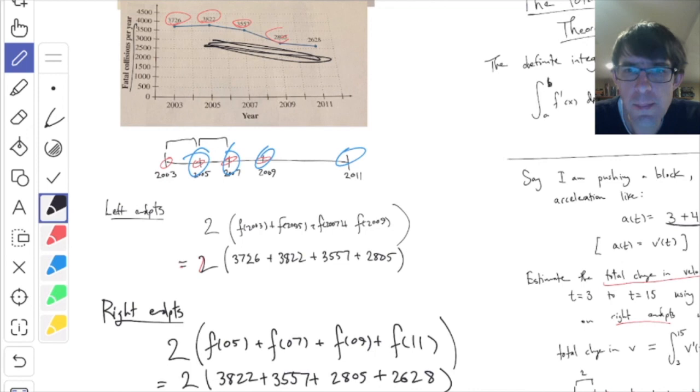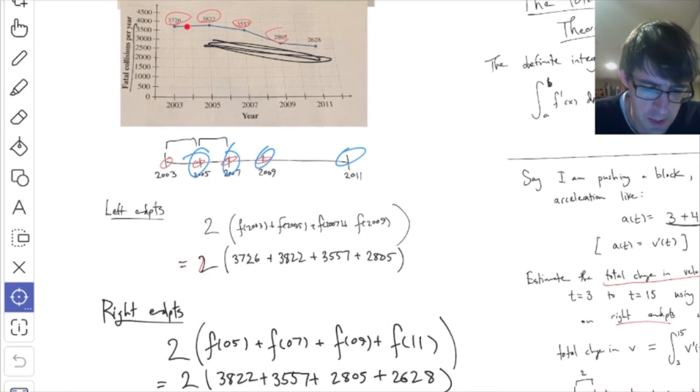When you're doing these on the homework, you'll notice there are some questions in this section which don't even give you a graph at all, all they give you is a list of numbers. But that's even better. In this example, there's no need to look at this graph, apart from this list of numbers. That's the only thing that matters. If all you're given is a list of numbers, you just use those numbers as these function values.